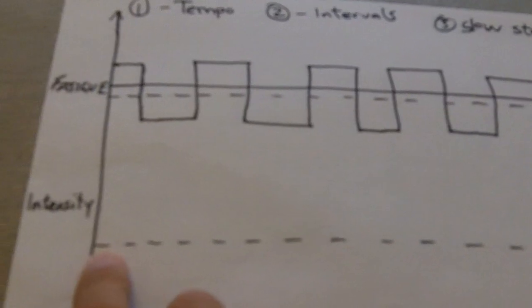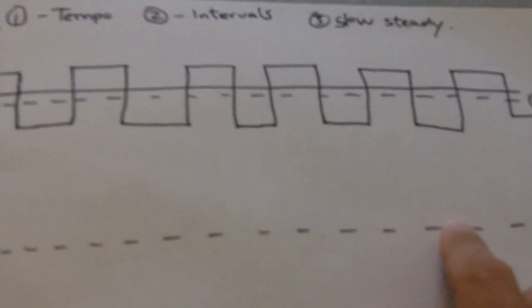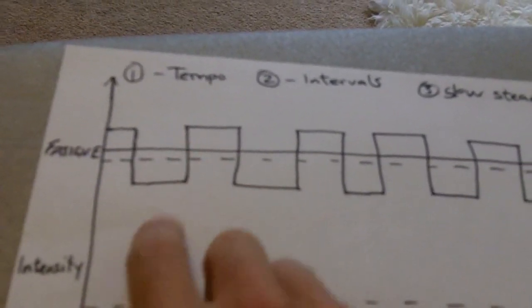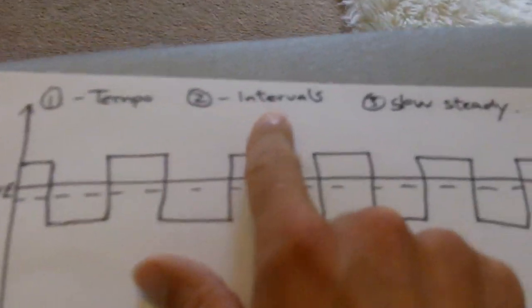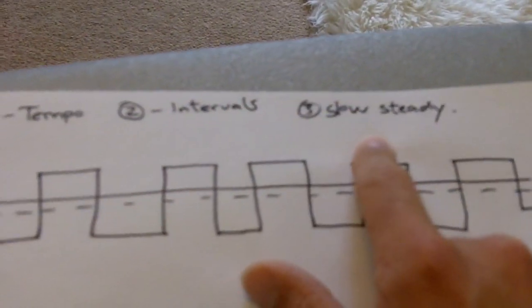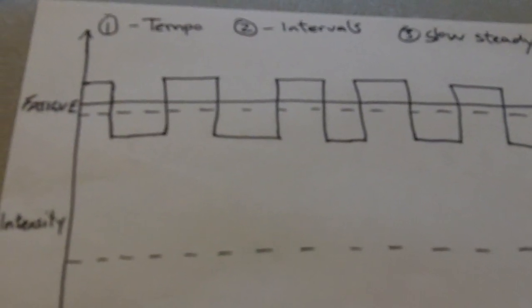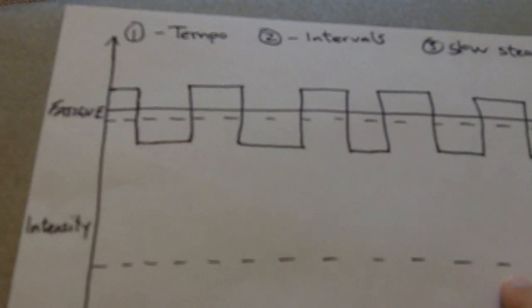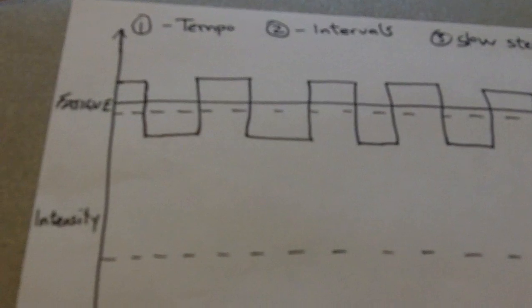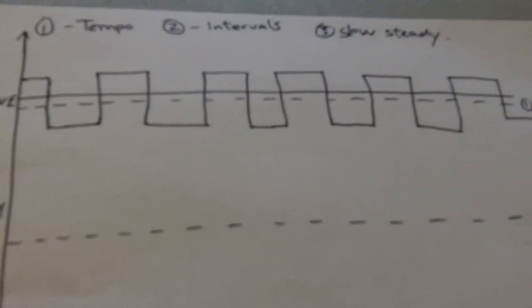Okay, but people tend to just stay at this type of session all the time. What we do is we combine all three. So we've got a tempo run, we've got interval training, and we've got slow steady runs, and that's why we've managed to get such great results, both in terms of the distance people can run and in terms of the time that they can achieve these runs at.